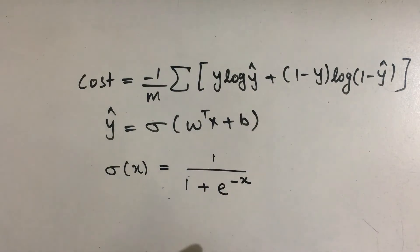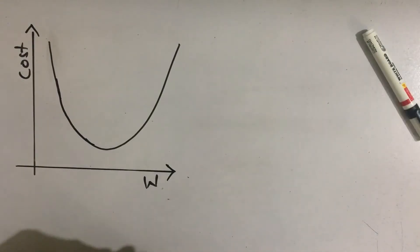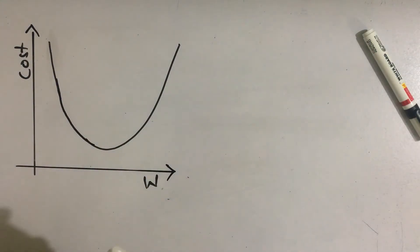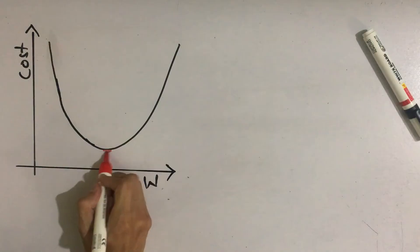So what is gradient descent algorithm? Let's say if we plot the graph of cost versus parameter w, then we will get a curve something like this. Now the minimum value of the cost function lies at this point.